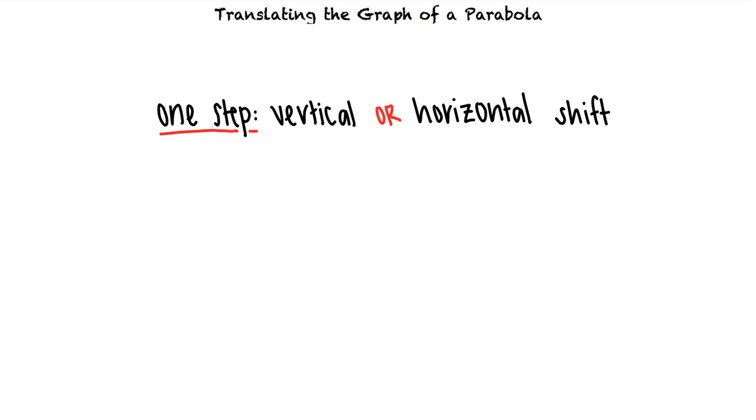What's the difference between a one-step translation and a two-step translation? When performing a one-step translation, we will shift the graph either vertically or horizontally. When performing a two-step translation, we'll shift the graph both vertically and horizontally.